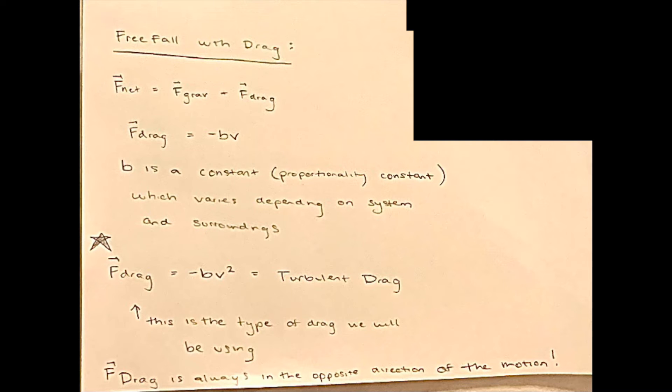From this, we get the equation for drag force equals negative bv, where b is a constant that varies due to many different factors, such as humidity, thickness of the air, and the specific shape of the system. In this case the system is a paper ball. The value of b could be very wide-ranging in different situations. For this specific lab, we are focusing on the effects of turbulent drag, which is where the drag force is proportional to the square velocity, thus drag equals negative bv squared.